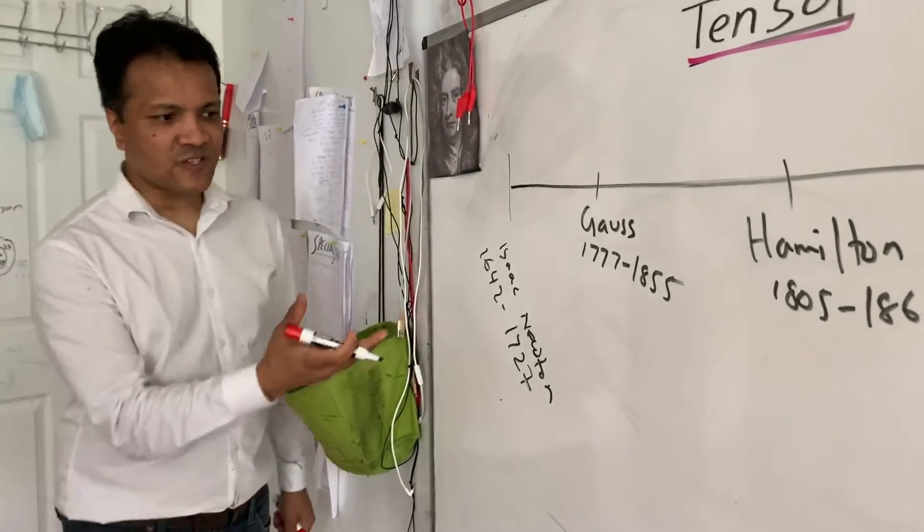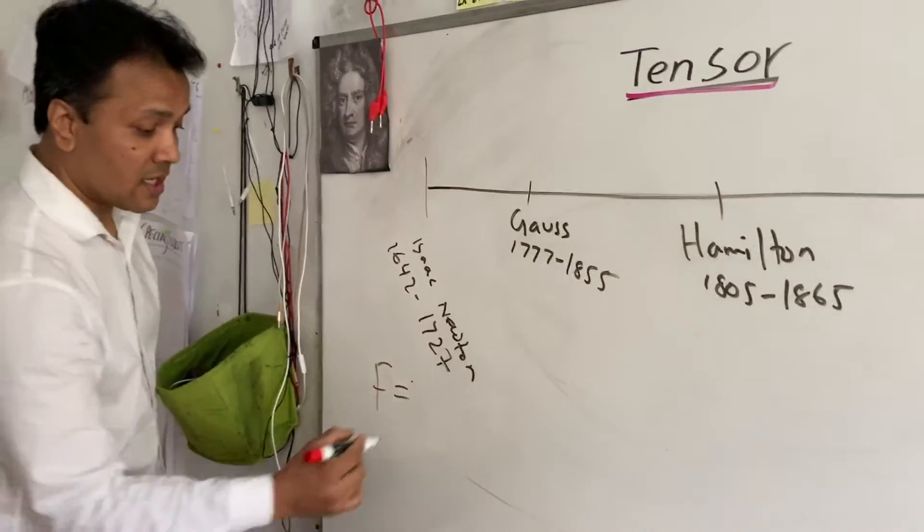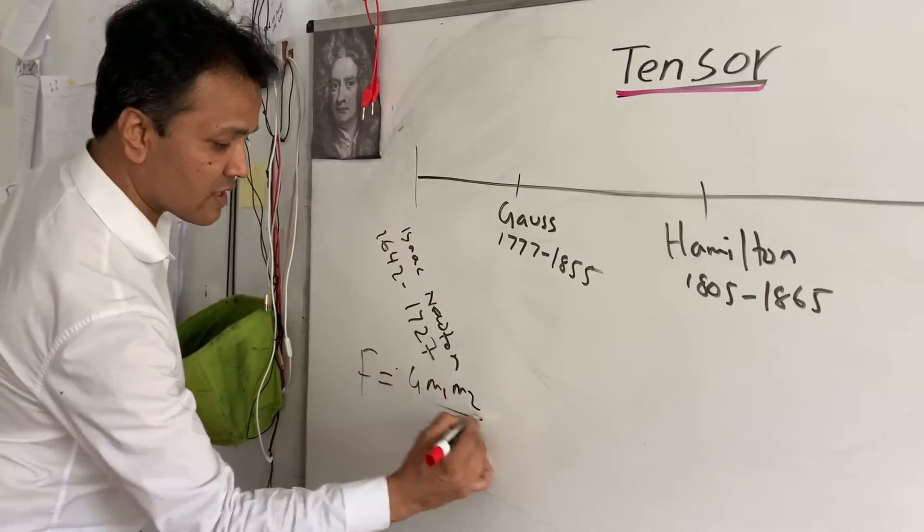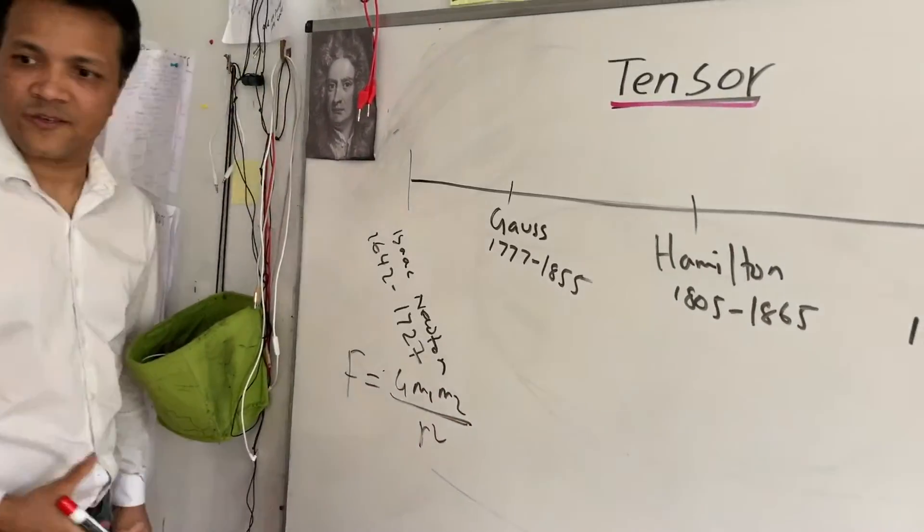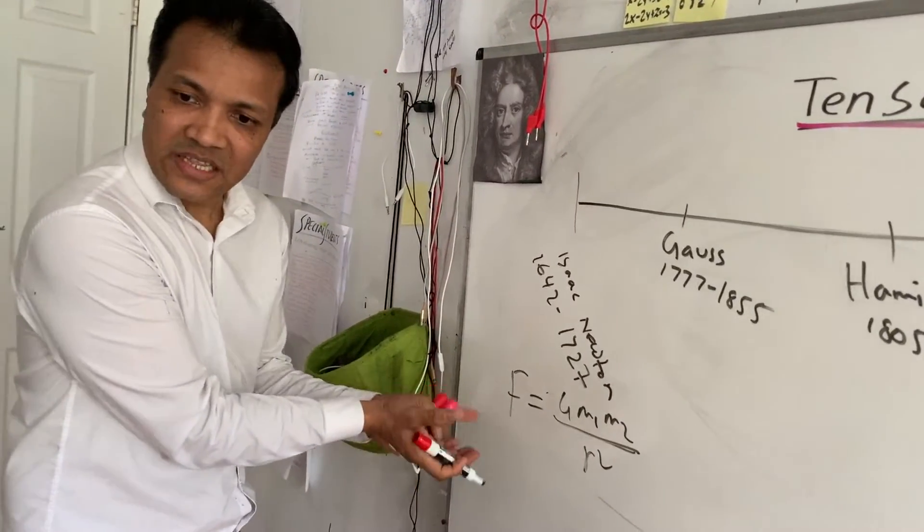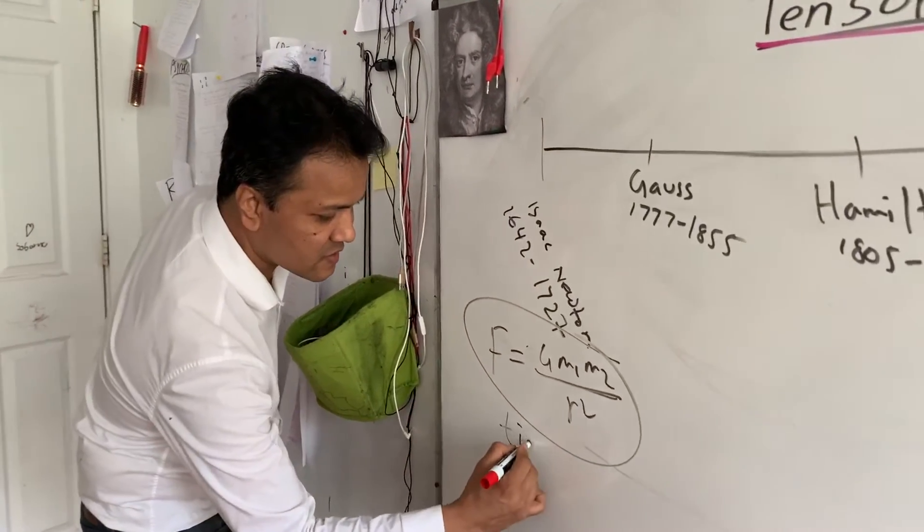So Sir Isaac Newton wrote, tells us that his study F = G m1 m2 over r squared. This is known as Newton's universal law of gravity. What he tells us in this study, what he tells us in this study is that time is,